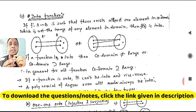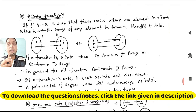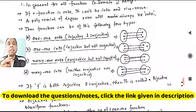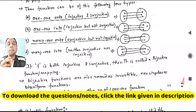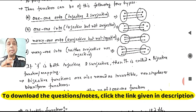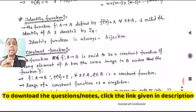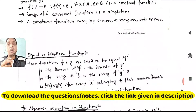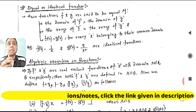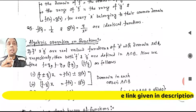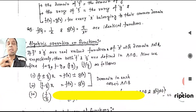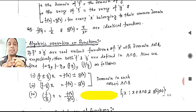We are seeing the classifications of functions. Today we will cover onto functions, combinations of onto and into mappings, many-one and one-one mappings, identity function, constant function, how to check if two functions are equal, and algebraic operations on functions.